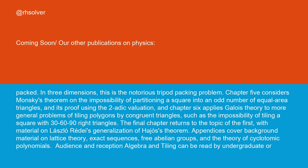Chapter 5 considers Monsky's theorem on the impossibility of partitioning a square into an odd number of equal-area triangles and its proof using the 2-adic valuation,